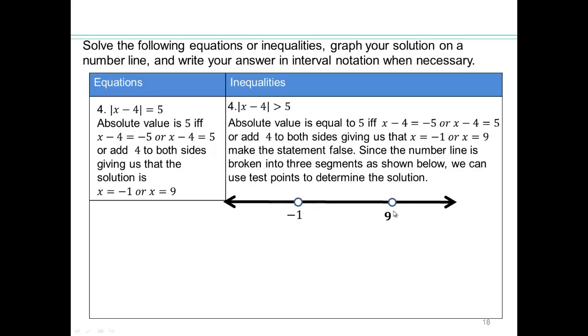So why should I remove negative 1 and 9? Because it's strictly greater than. You cannot have. So if you include them, that means they're going to make it exactly equal to 5, and equal to 5 is not allowed. You want greater than 5. All right, so those are not included.